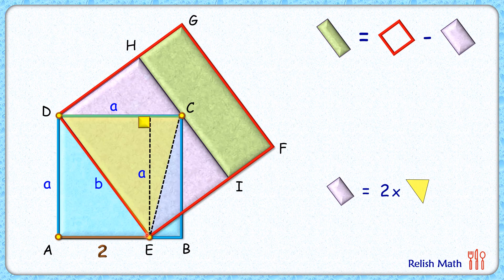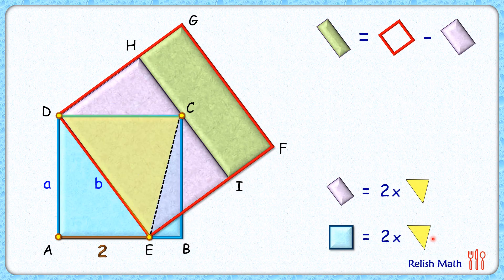Using the same yellow triangle, its area is half of base times height, which is half of a times a, or half of a squared. The blue square area is a times a, or a squared. So the blue square area is two times the triangle area.